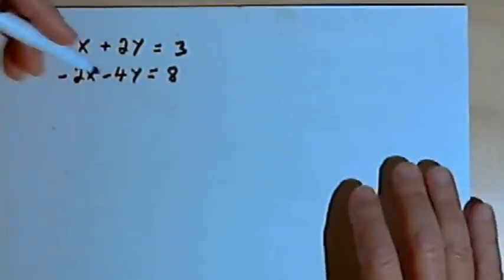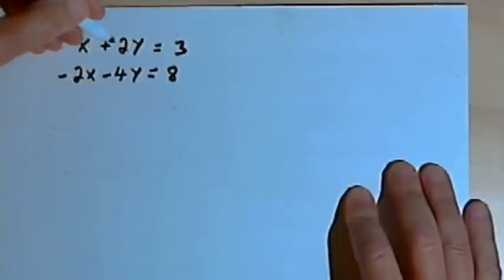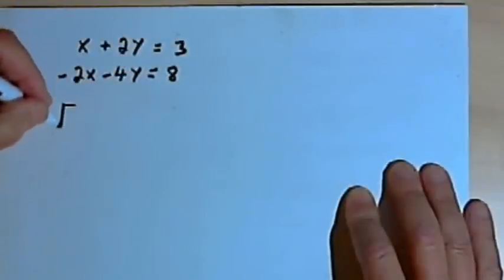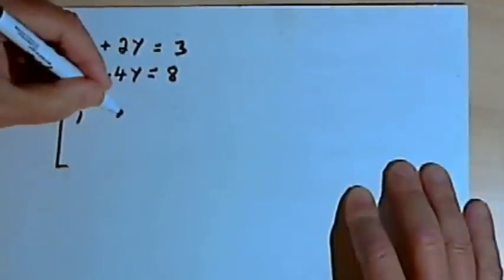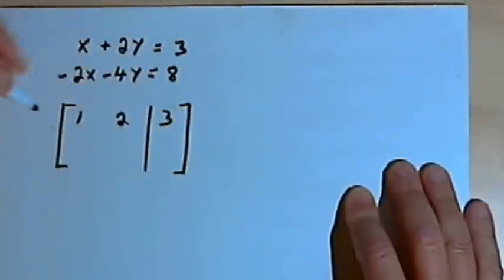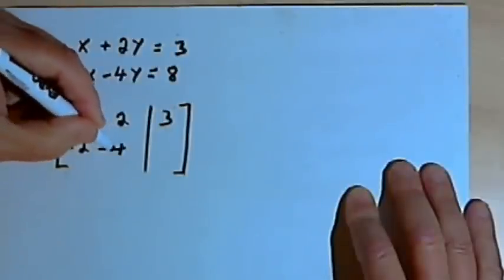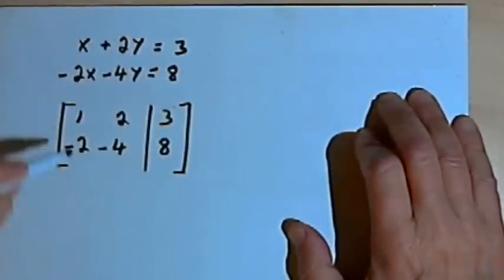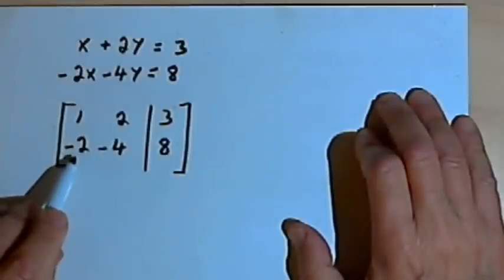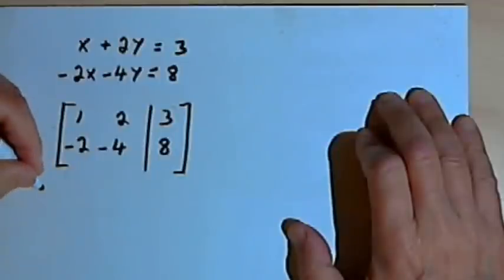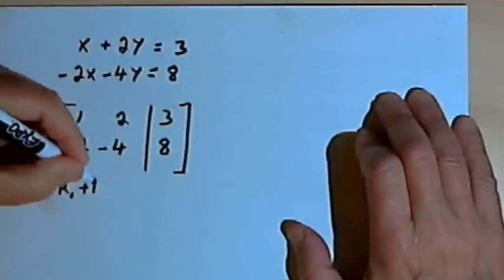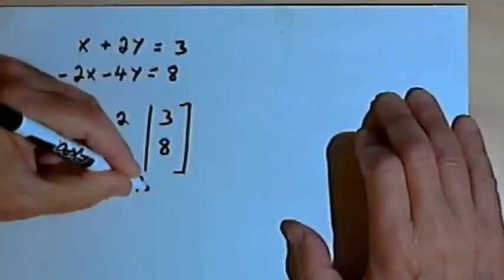Now let's look at a different situation. Say we've got this system of equations: x plus 2y equals 3, and negative 2x minus 4y equals 8. Let's try to solve this with a matrix: first row 1, 2, 3; second row negative 2, negative 4, 8. I already have a 1 in the first row, first column, so I want to turn that negative 2 in the second row into a 0. I can do that by multiplying 2 times row 1, adding it to row 2, and making that the new row 2.